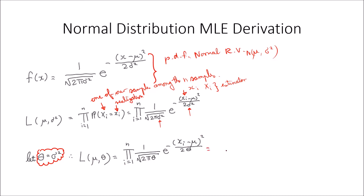So the likelihood function is the product from i=1 to n of (1 / sqrt(2*pi*theta)) * exp(-(x_i - mu)² / (2*theta)). We simplify: 1 over sqrt(2*pi*theta) is the same as (2*pi*theta)^(-1/2), and multiplying this n times gives (2*pi*theta)^(-n/2). The exponential terms multiply to give exp((-1/(2*theta)) * sum(x_i - mu)²). This is how we simplify the likelihood function.